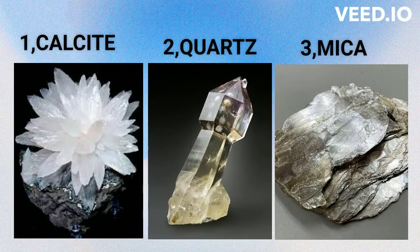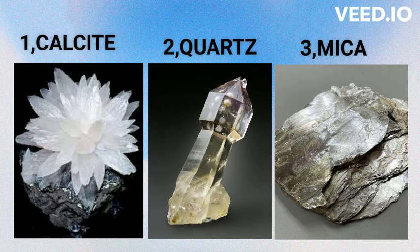When viewed under a microscope with cross-polarized light, anisotropic minerals display varying colors and brightness depending on the orientation of the mineral relative to the polarization filters. As the mineral is rotated on the microscope stage, the colors and intensity of light change, providing important information about its crystallographic structure. Refractive index, optical extinction, and pleochroism — that is, variation in color or intensity when viewed from different angles — are all physical properties of anisotropic minerals. These properties depend on the crystallographic orientation of the mineral relative to the direction of light propagation. Examples of anisotropic minerals include calcite, quartz, and micas.